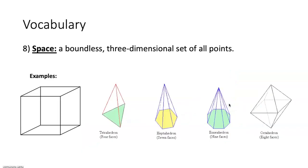Space is a boundless three-dimensional set of all points. All of these figures exist within space. We all exist within space because it's the boundless three-dimensional set of all points — it's what everything is contained within.